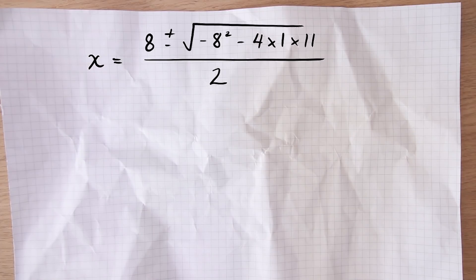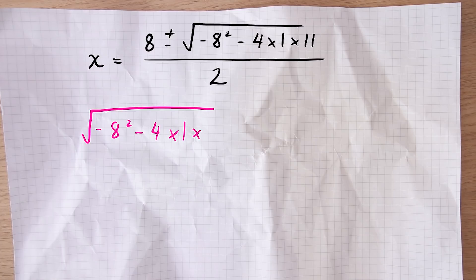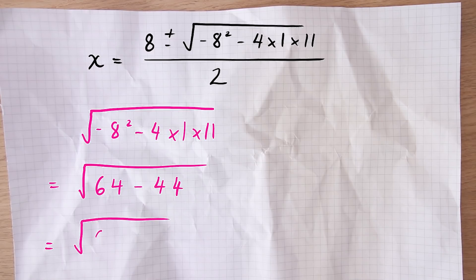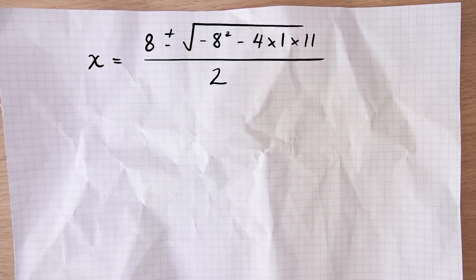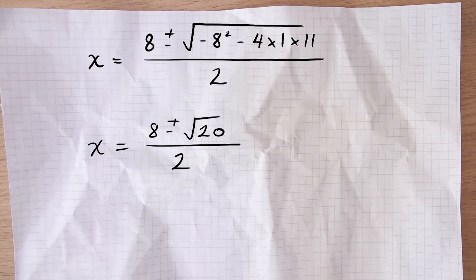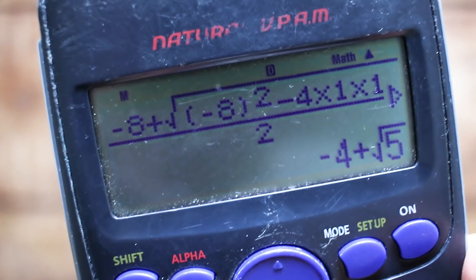So the first part, negative b — we know that's 8. For the square root part, I often find it easier to do this in my head. In this example, negative 8 squared is 64, and 4 times 1 times 11 is 44, so I have 64 take away 44, which is 20. And that's positive — which is a good sign. If it's negative, go back and check what you've done. The last bit is just 2a — 2 times 1 — so that's just 2. Don't forget: if you've got a negative number that you're squaring, you've got to put that negative number in brackets.